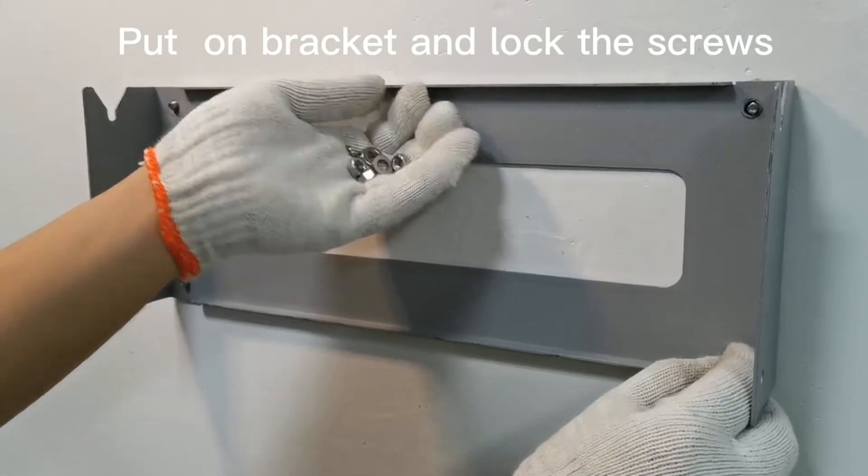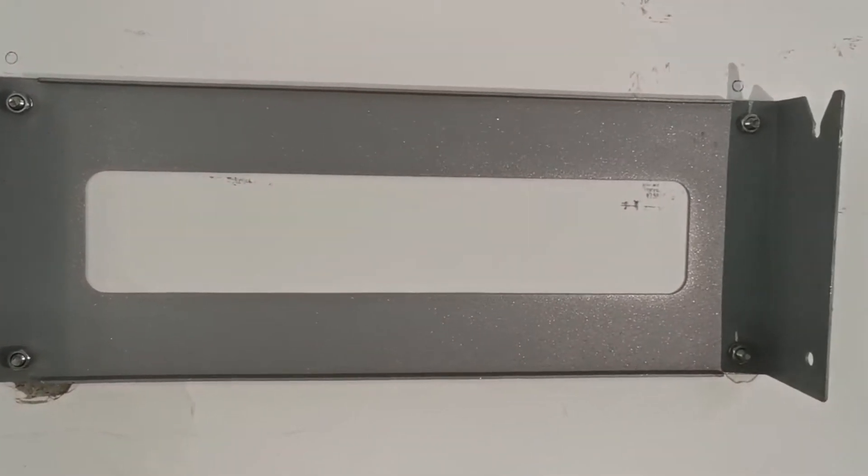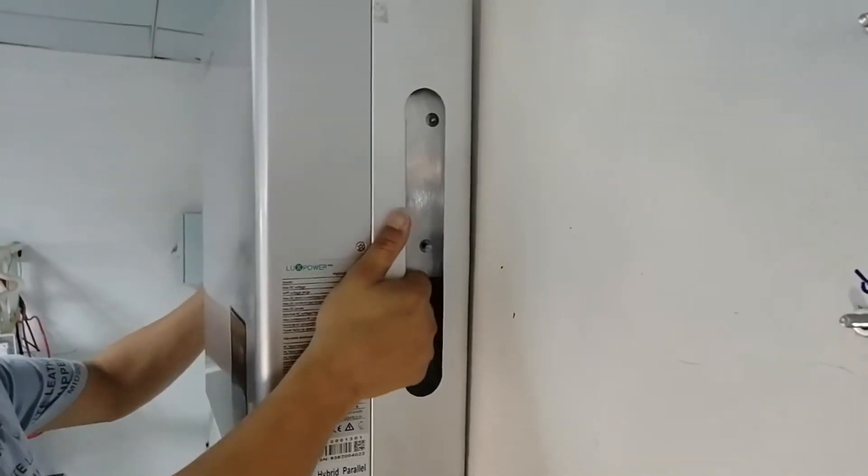Step 3: Install the inverter on the wall mounting bracket, and lock the inverter using the security screws.